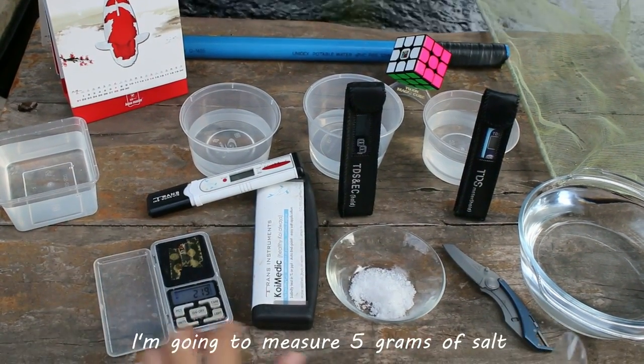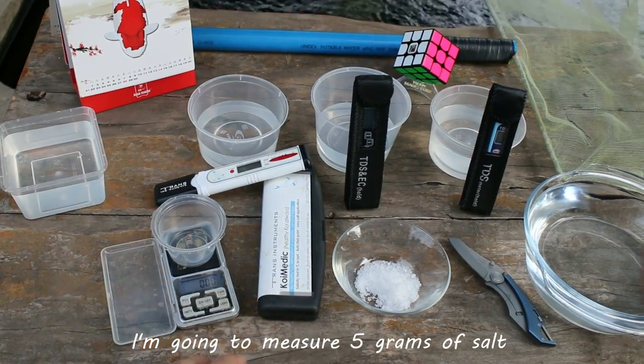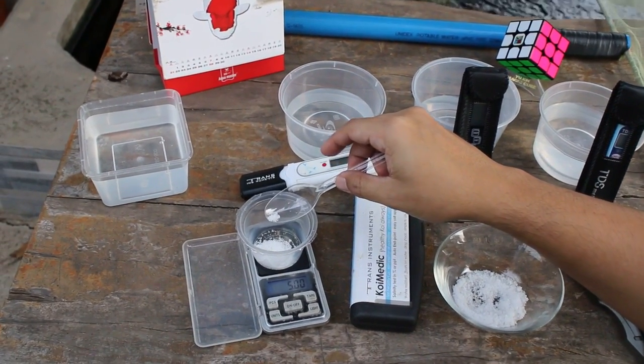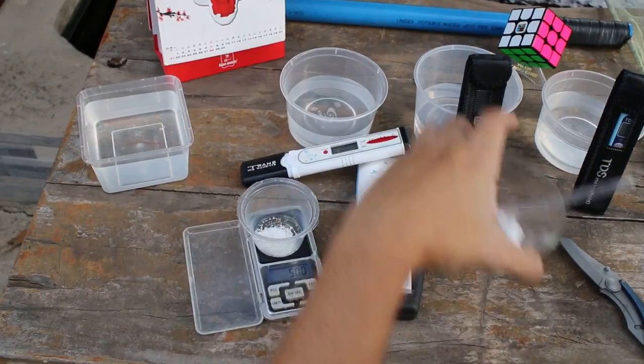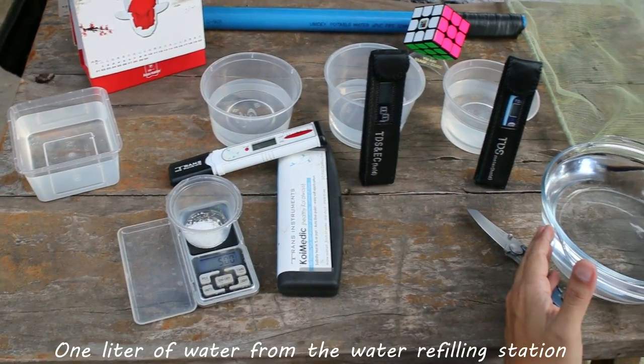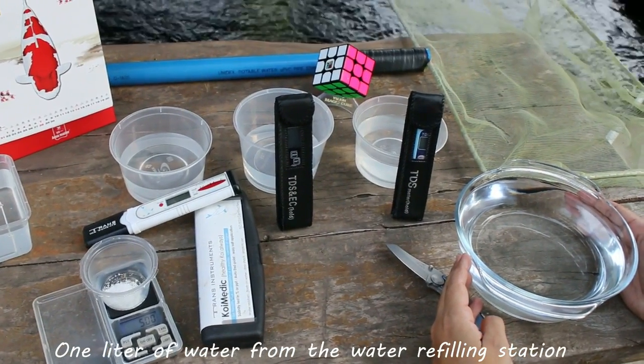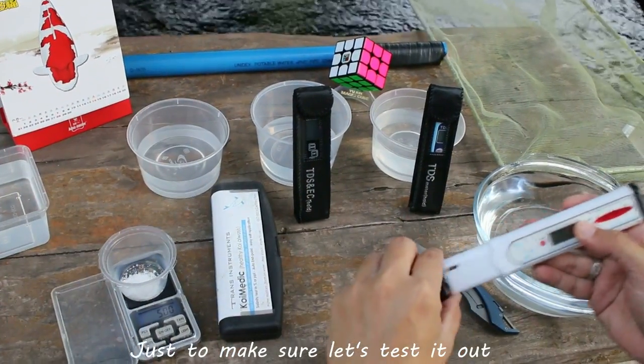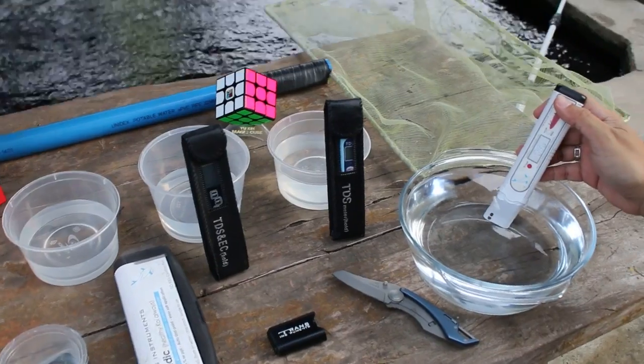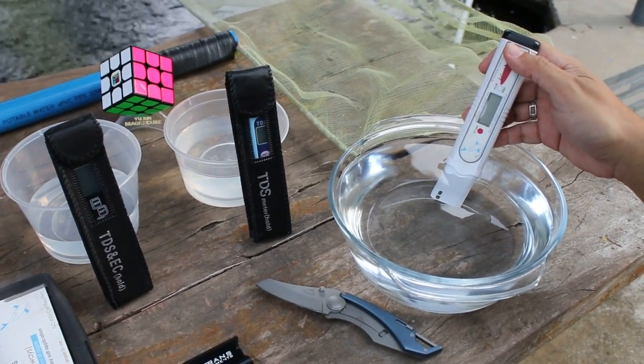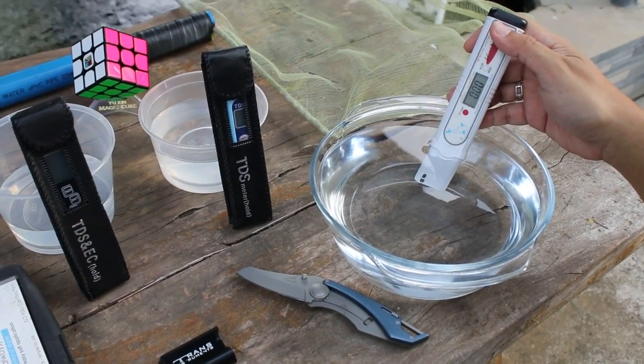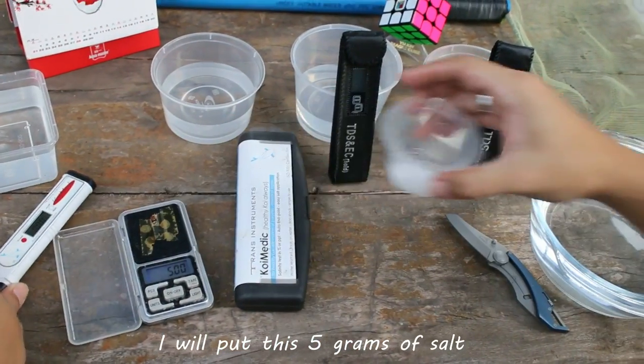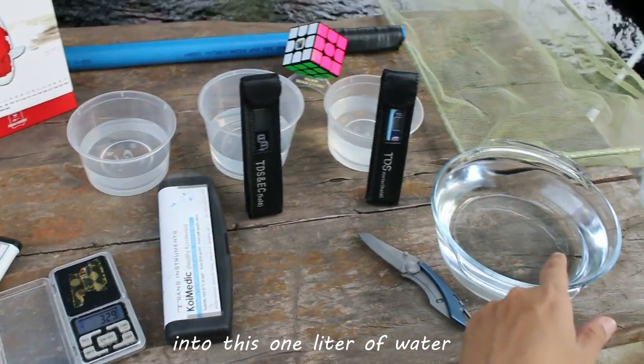Here we go, I'm going to measure five grams of salt. Yes, that's it, five grams. Here on my right is one liter of water from a refilling station. This has zero salting. Zero, right. Let's wait for the beep. There you go, there's that beep. So going back, I will put this five grams of salt into this one liter of water.